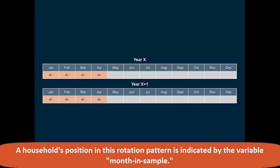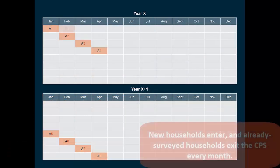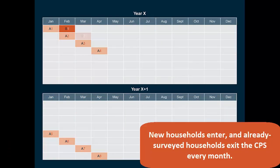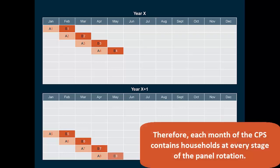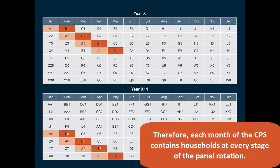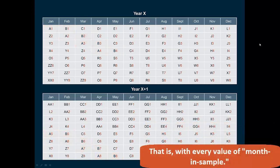A household's position in this rotation pattern is indicated by the variable month-in-sample. New households enter and already surveyed households exit the CPS every month. Therefore, each month of the Current Population Survey contains households at every stage of the panel rotation, that is, with every value of month-in-sample.